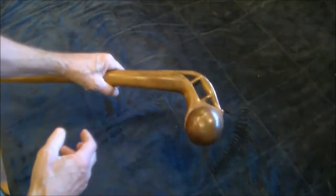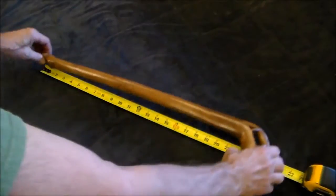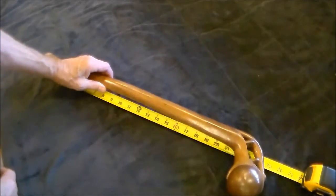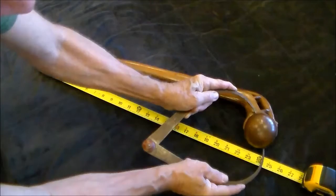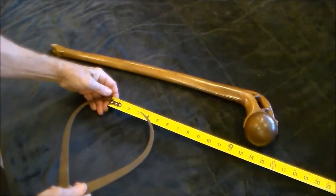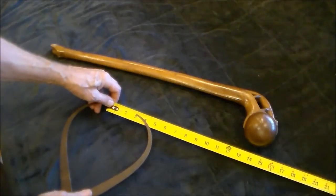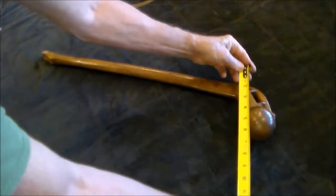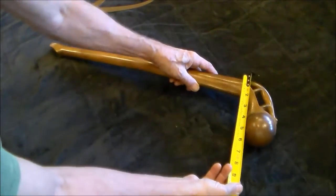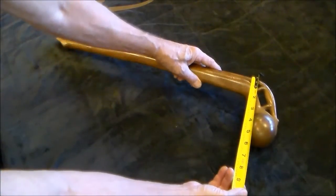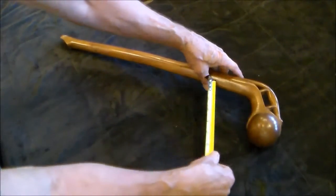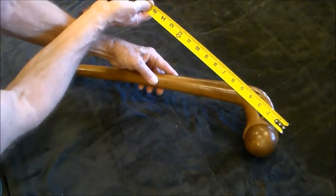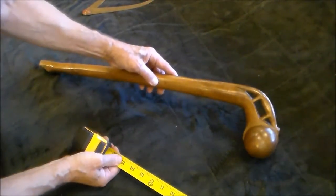The dimensions on this: it's 25 inches long. The ball measures three inches in diameter. It's six inches in depth from the back to the bottom of the ball. The length of the otter is seven inches from tip of the head to the tail.